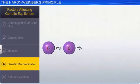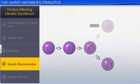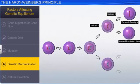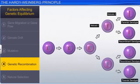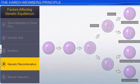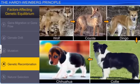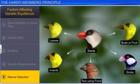Genetic recombination leads to variations in offspring. And if this variation is naturally better selected than the parental genes, it leads to speciation over a period of time. Natural selection also affects genetic equilibrium. It is a process in which future generations inherit traits with variations from their ancestors. For example, Darwin's finches of the Galapagos Islands.